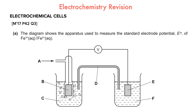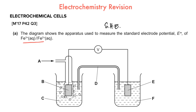Electrochemical cells have two half cells as shown here. If they're set up to measure the standard electrode potential of a particular half cell, one of the two half cells will have to be a standard hydrogen electrode. Each half cell has two oxidation states — for example, if asking you to measure the electrode potential of the Rn2/Rn3 half cell, you'd have the plus three and plus two oxidation states.